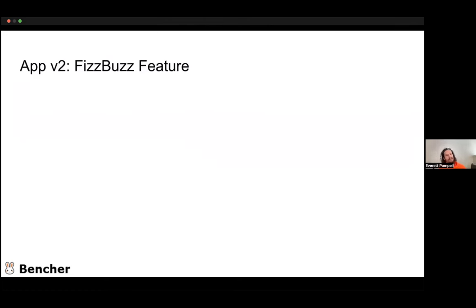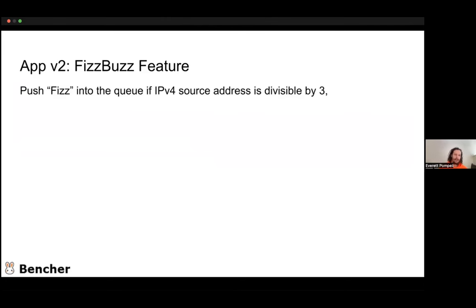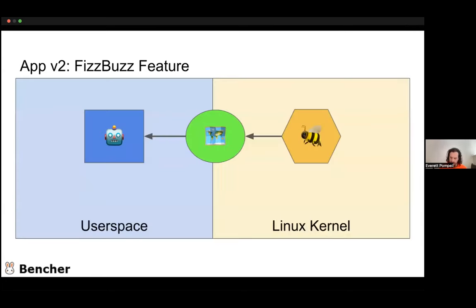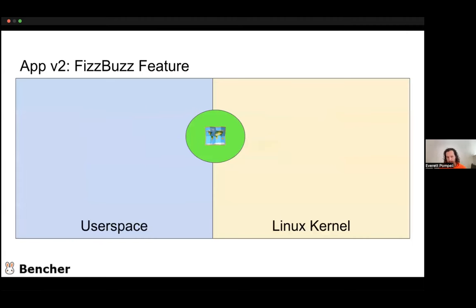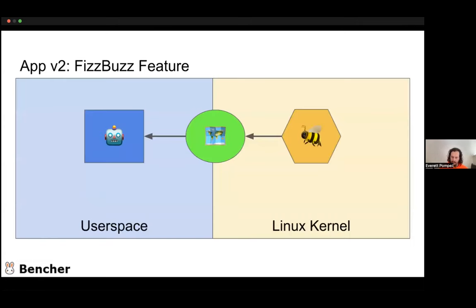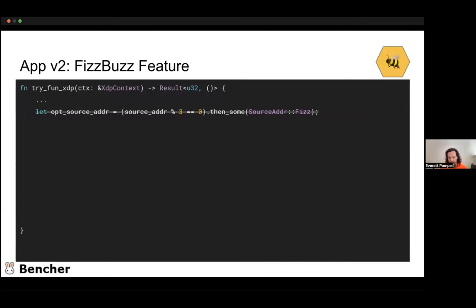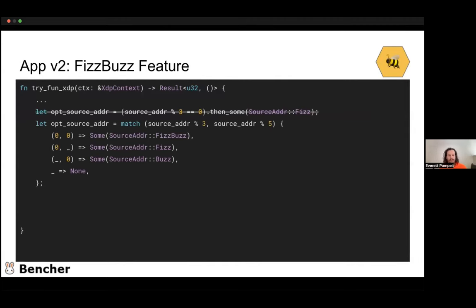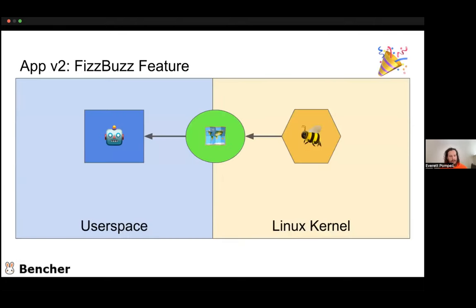Now our fizz buzz feature: push 'fizz' into the queue if the IPv4 source address is divisible by three, 'buzz' if divisible by five, or 'fizz buzz' if both — otherwise return XDP pass. On the map side, we add buzz and fizz buzz message types. On the kernel side we update our logic to implement fizz buzz based on which message to send. There are really no changes to make on the user space side, so we're done. That is our next iteration of the code.